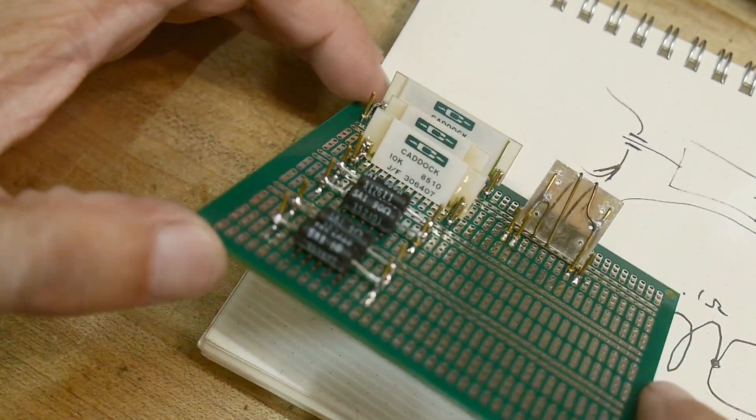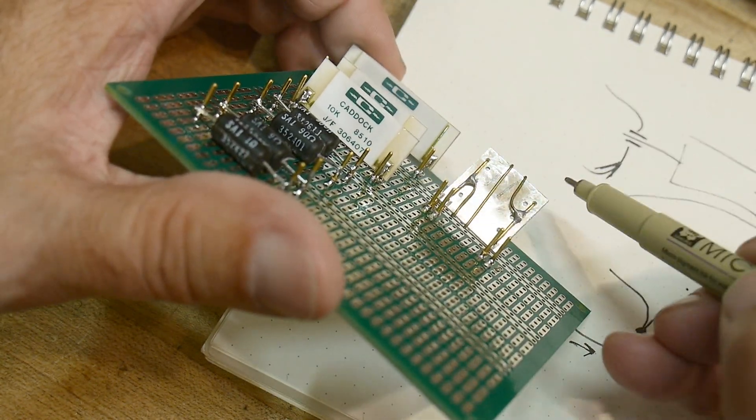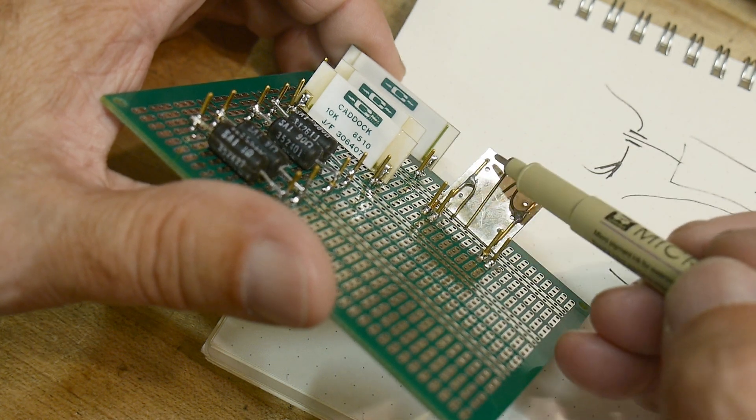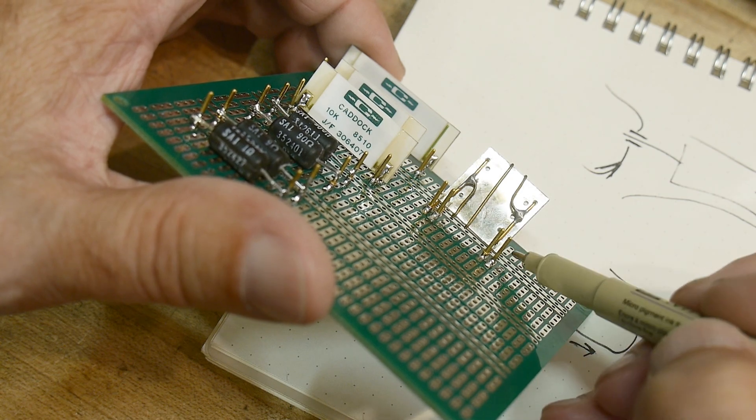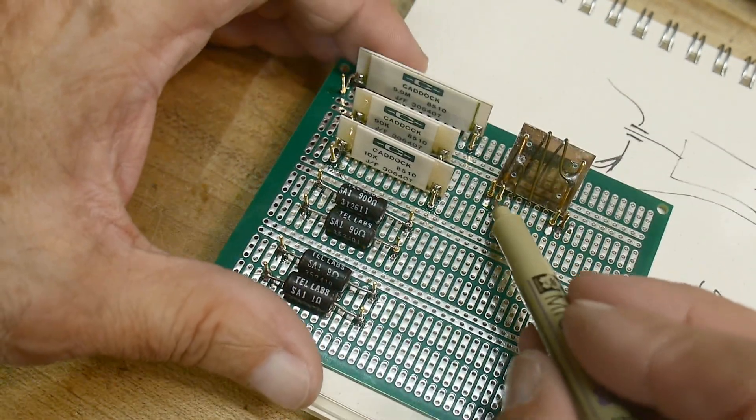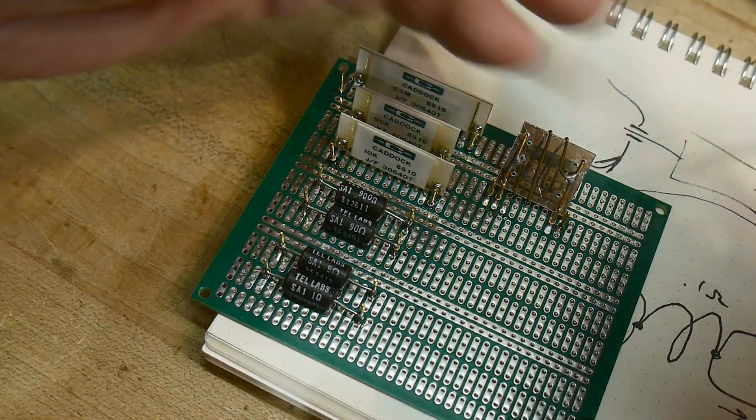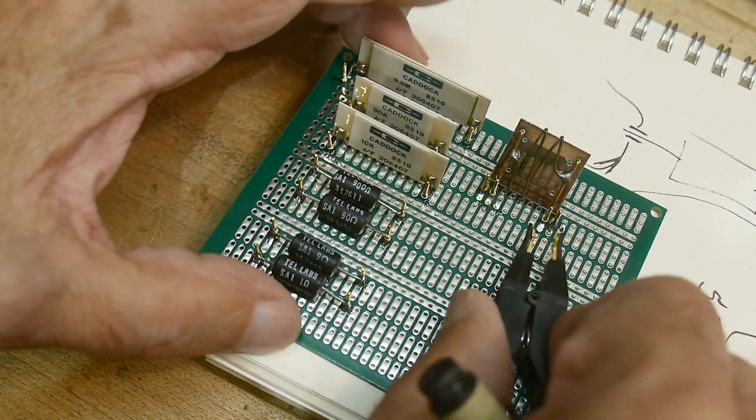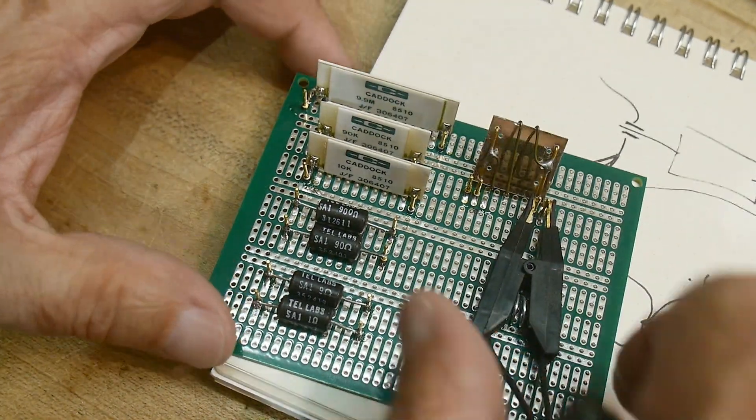So that's that funny resistor over here that's got one wire going that way and one wire going that way, those are the source and sense. There's just two pins on this side and two pins on this side, so I can take my test lead and just put it on like that.